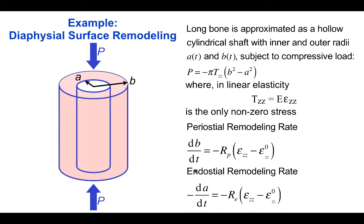Its rate of change represents the endosteal remodeling rate and that is also proportional to the difference between the axial strain ε_zz and the growth equilibrium strain ε_zz⁰.